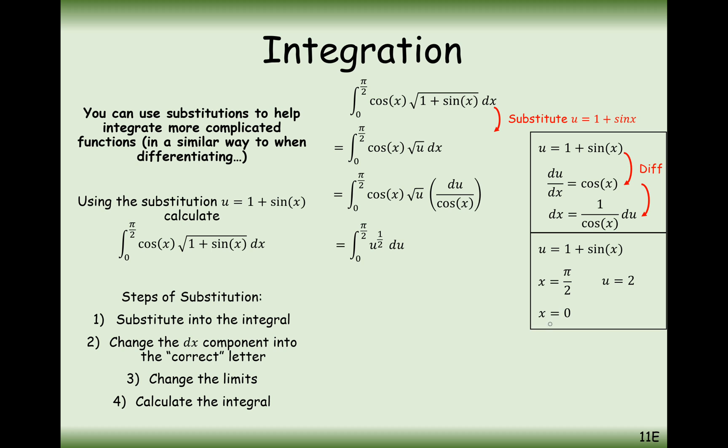For the substitution x equals 0, u is going to equal 1. So in fact, these boundaries change to 2 and 1 on the top there.